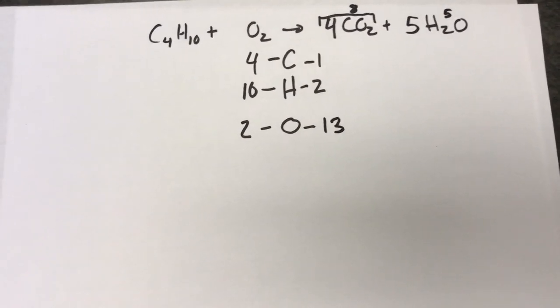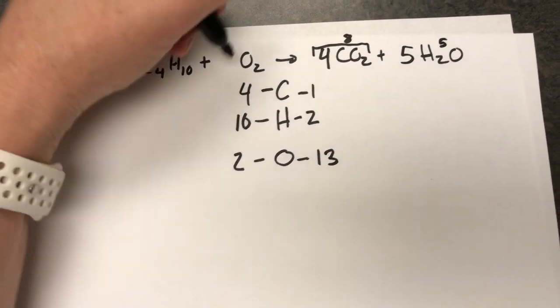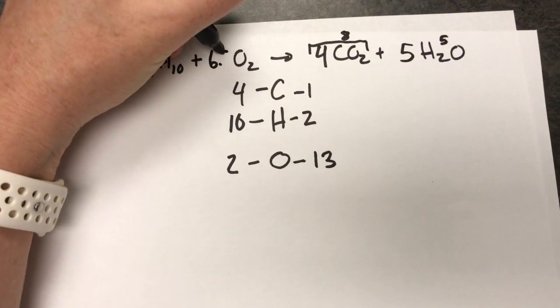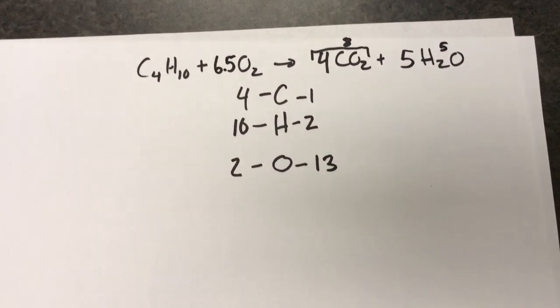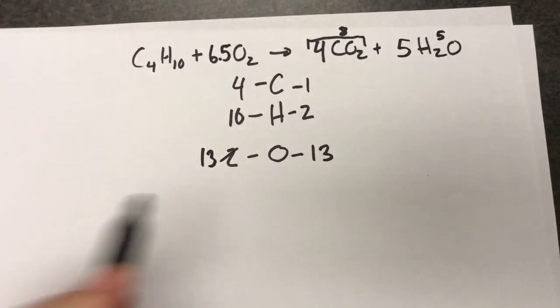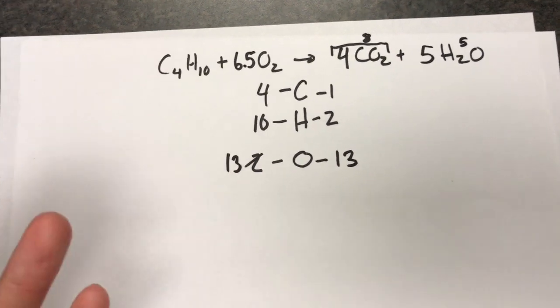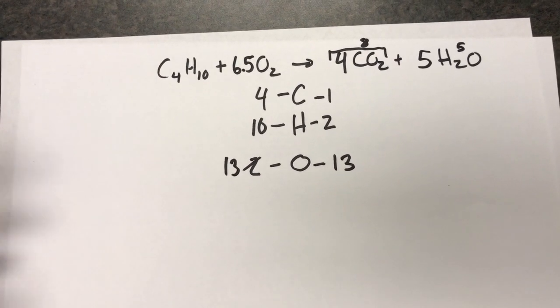Now this doesn't change anything. Our rules still stay the same. 13 divided by 2, I think most people would say is 6.5 or 13 halves. But when you do this, now you have a balanced reaction. But you should notice that 0.5 is kind of funky.